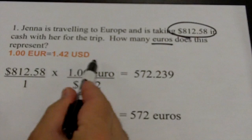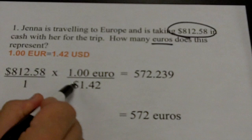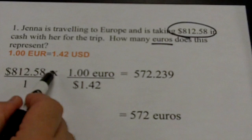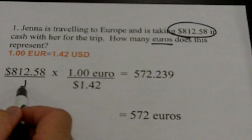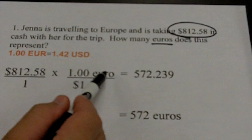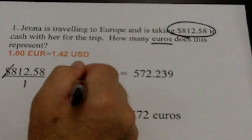Why do I do that? Two reasons. First, I want to get rid of the dollar sign unit — the dollar in the denominator will cancel with the dollar in the numerator. Second, it's mathematically legal. What I'm really doing is multiplying by one, because anything divided by itself is one. 1.00 euro is the same thing as $1.42, so I'm multiplying by one — a mathematically acceptable procedure. Now I cancel: dollars cancel with dollars, and I'm left with euros.